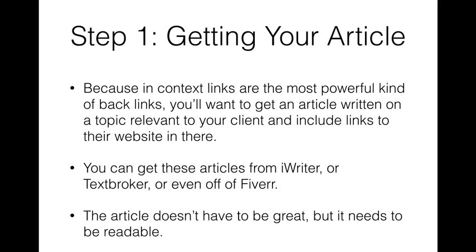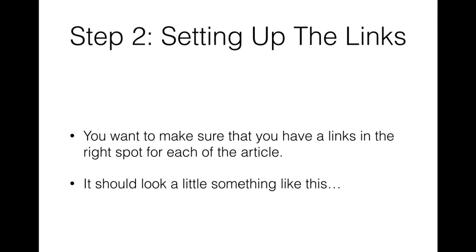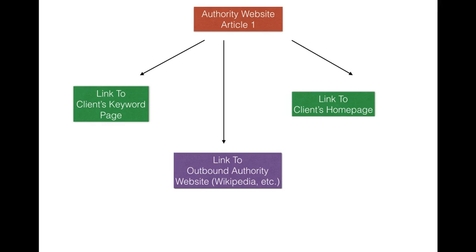It's going to be linking back with the right anchor text to the client's website. Step two is making sure we have links in the right spots for each article. Within that article you want to have three links. First, a link that goes to the client's homepage. Second, a link that goes to the client's keyword page, if it's not the homepage. And third, a link going to an outbound authority website — like Wikipedia, or a dot-edu — something with authority that you're referencing. Google likes to see that.